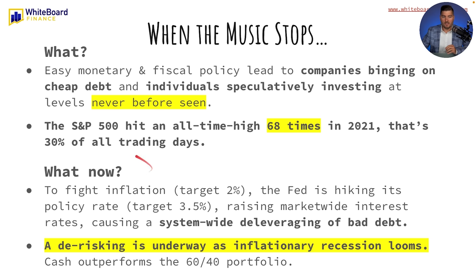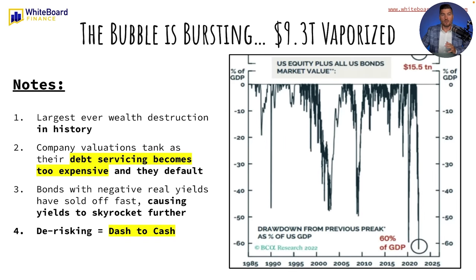So what now? In order to fight inflation, the Fed is targeting a 2% CPI — consumer price index — rate. The Fed is hiking its policy rate, its Fed funds rate, to a 3.5% target, raising market-wide interest rates and causing a system-wide deleveraging of bad debt. A de-risking is underway as an inflationary recession looms. Cash, which is typically trash — or at least losing purchasing power to inflation — is now outperforming your traditional 60/40 portfolio: 60% stocks, 40% bonds. The bubble is bursting. Just recently, we've had about $9.3 trillion vaporized — the largest ever wealth destruction in history. This chart shows the drawdown from previous peak percentages of US GDP, with events in 1990, the mid-2000s, the great financial crisis, COVID, and now we're right here.